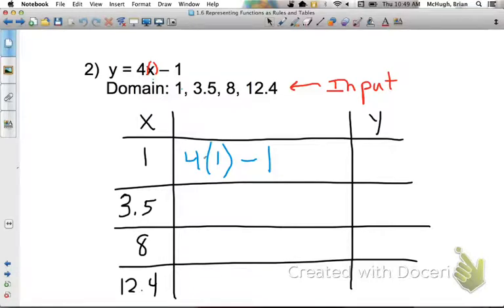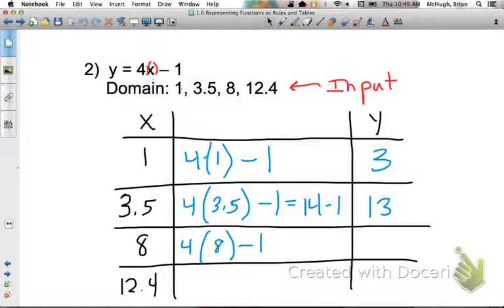If I plug in 1, I'm going to multiply first and then subtract the 1. So this answer is going to be 3 for the output. If I substitute 3.5 in for x, I'll show the work right here. 3.5 times 4 is going to get me 14. 14 minus 1 is 13. So you can use that middle column as a way to show your work and organize your work. 32 minus 1 is 31.